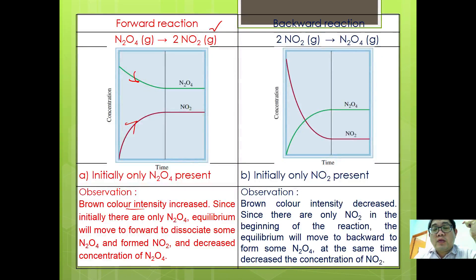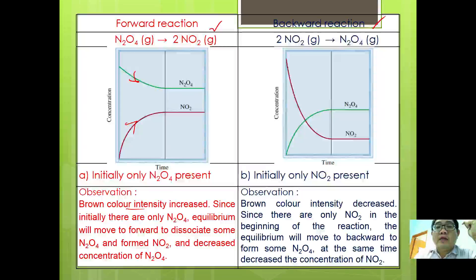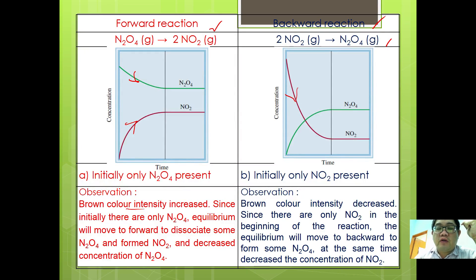There is also another reaction which we call a backward reaction. From a reversible angle, the reaction goes backward, so you have 2NO2 becoming N2O4. What will happen is that the concentration of NO2 will decrease, whereas concentration of N2O4 will increase. What we observe here is that brown color intensity will decrease.